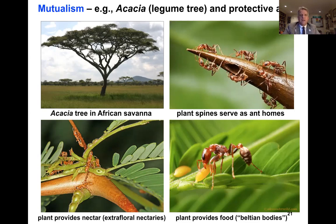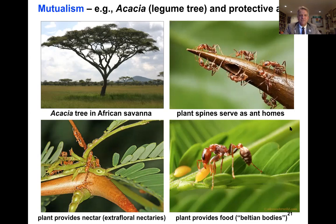I said, what a great place to sit and have my sandwich. Well, that was a Triplaris tree that has a commensal ant — they immediately started falling on and stinging me. That was my last time leaning up against a tree with protective ants. Back to our story: we have the acacia tree in the African savanna.